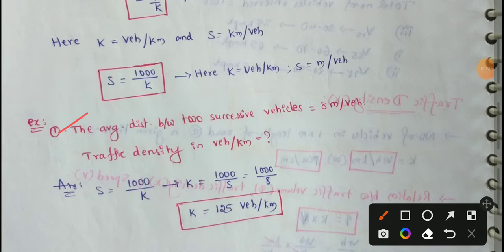First example: the average distance between two successive vehicles is 8 meters per vehicle. So 8 meters. Next, we need to find the traffic density in vehicles per kilometer.